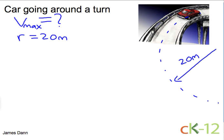So what else do we know? Let's say we also know the coefficient of static friction between the tire and the road is 0.72. We want to find the maximum velocity.